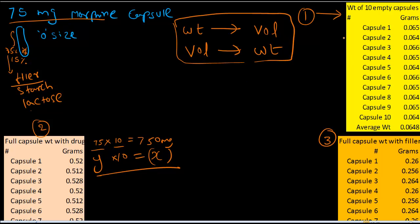The first step: I weighed out 10 empty capsules, and the average weight of these 10 capsules is 0.0648 grams. Don't get confused with the units — remember, 0.0648 grams.